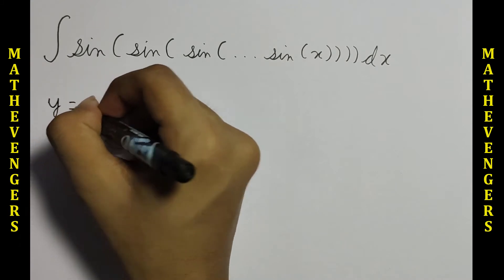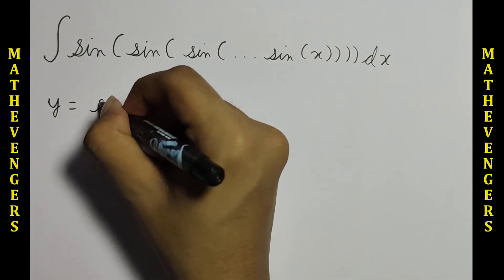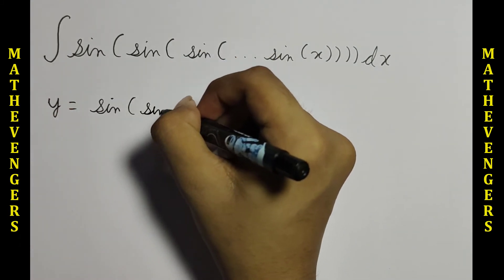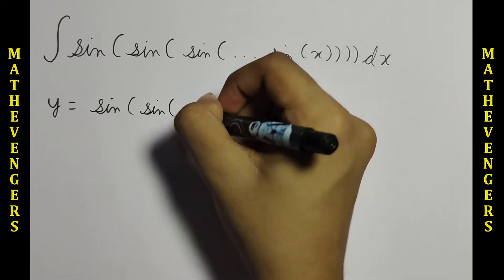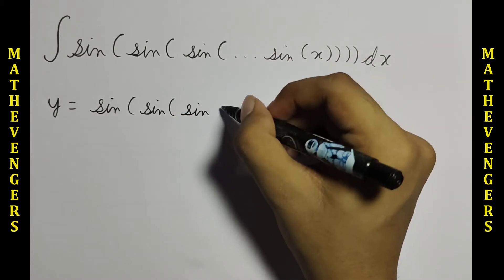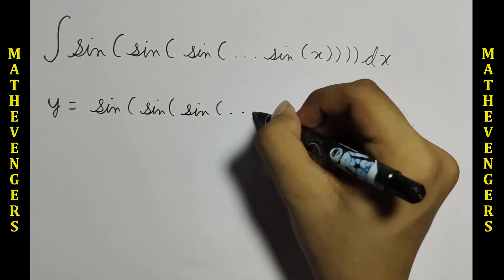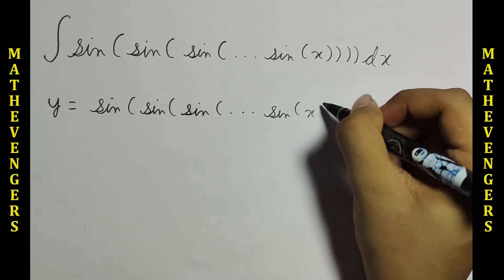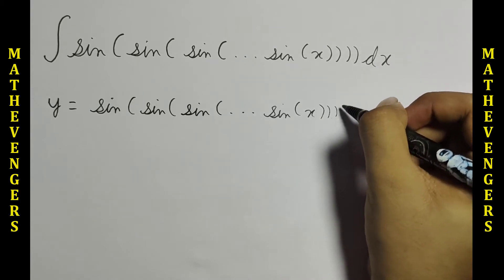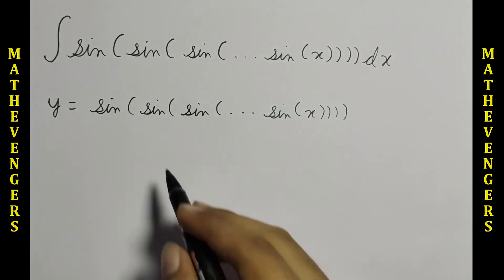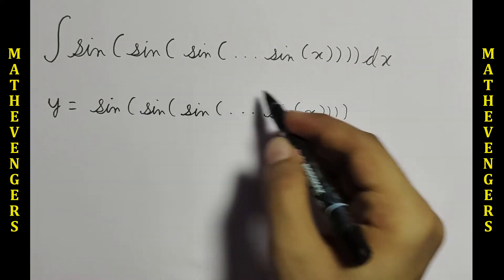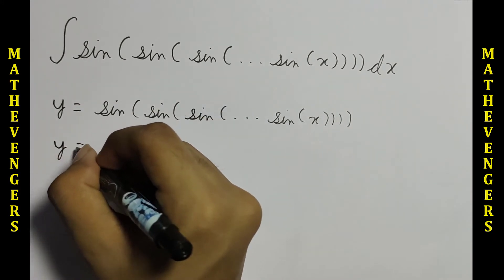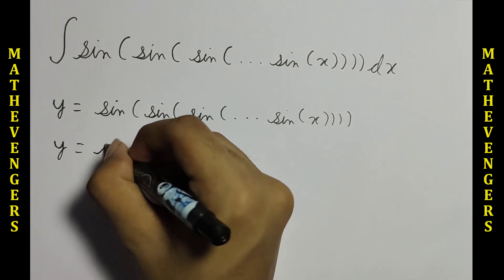Let y equal to sine of sine of sine of... dot dot dot... sine of x. We can see that this thing is also equal to y. So we can write this as y equal to sine of y.